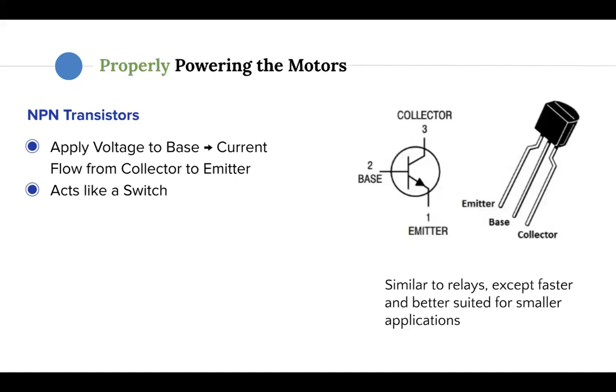So what component acts like a switch that can allow us to turn on and off the motor? Well, a transistor. There are three pins or leads into a transistor: the emitter, the base, and the collector. The base is what acts and does the switching. When you have a low signal being fed into the base, the current will be prevented from flowing from the collector to the emitter, but when a high signal is passed to the base, current will be allowed to go from the collector to the emitter.